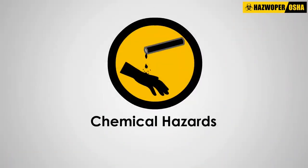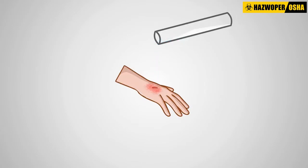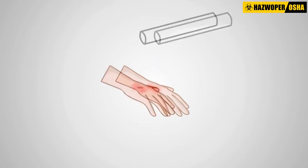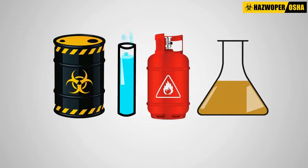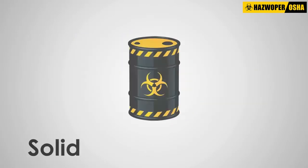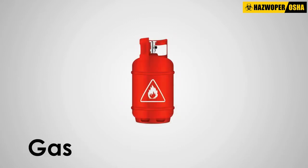Chemical hazards. Preventing exposure to toxic chemicals is a primary concern at a hazardous waste site. Most sites contain a variety of chemical substances in solid, liquid, or gaseous form.